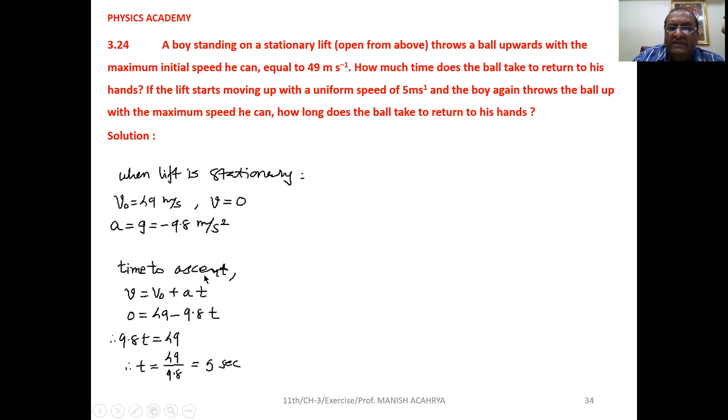Time to ascend, time taken by it to reach maximum height, that is V = V₀ + aT. From that equation, we can write V = 0, V₀ = 49, a = -9.8 into T. So if we make T the subject, then we will get T = 5 seconds.